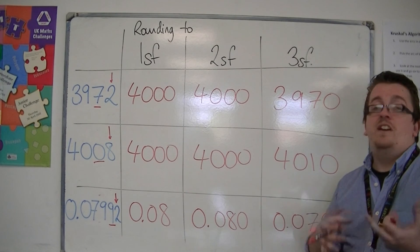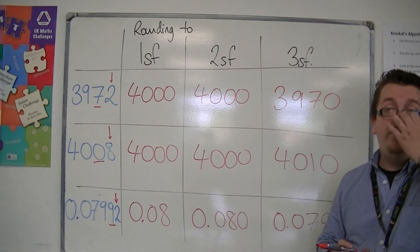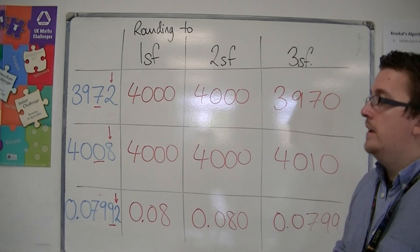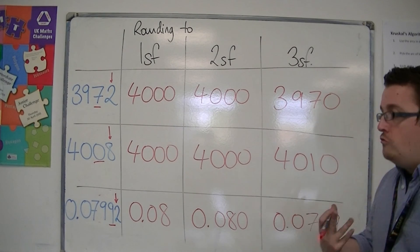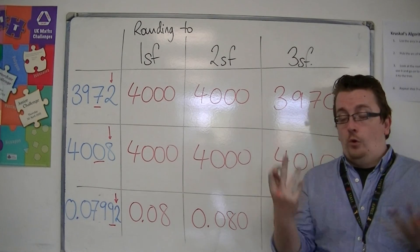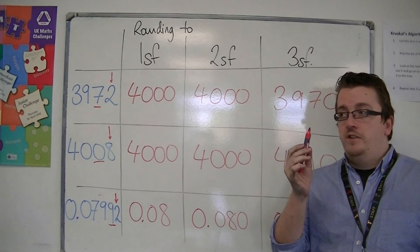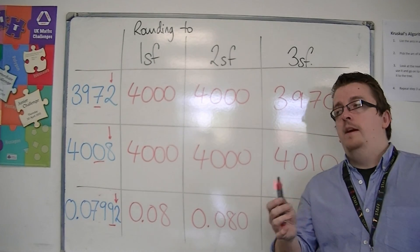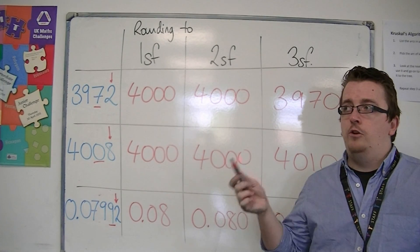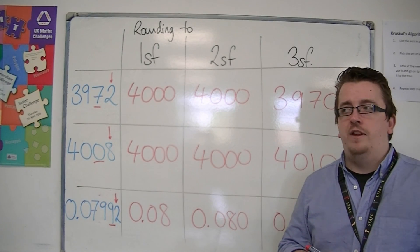and as you can see, there are differences with decimal places and our other rounding, but overall, it has all been the same method. You find the position you want, you look 1 to the right, and that tells you whether you should round up or round down.